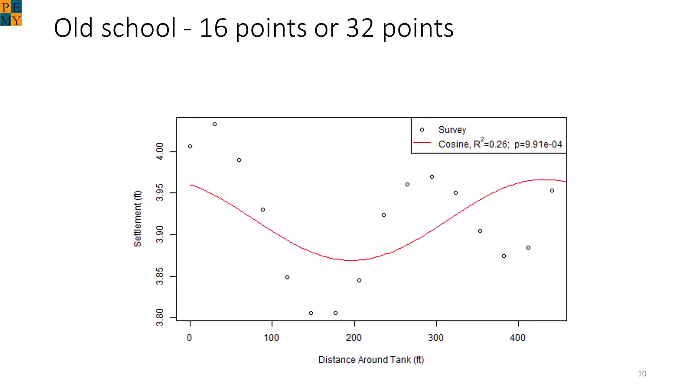Here is a typical settlement profile from a real tank where 16 equally spaced points were used. Note that even though R-squared is only 0.26, the p-value is essentially zero. Therefore, there is a rigid tilt plane and this is where API 653 currently goes astray.